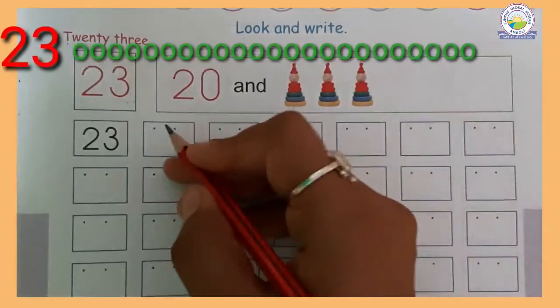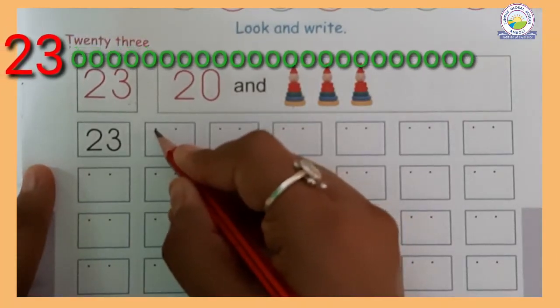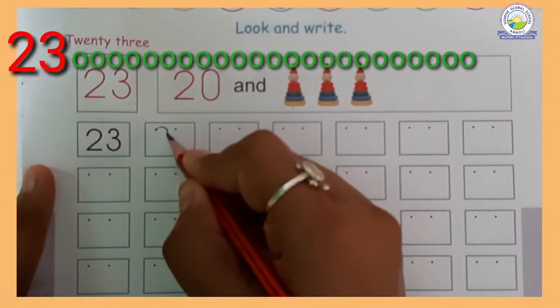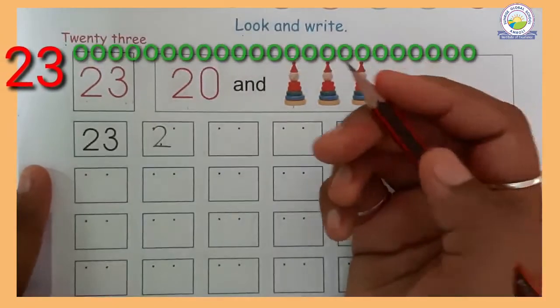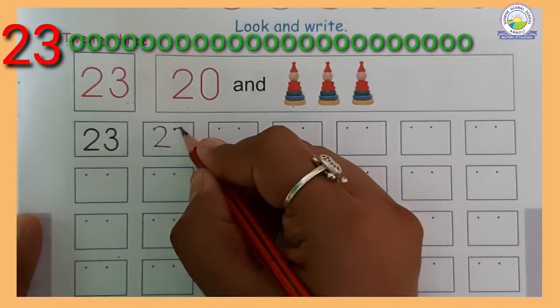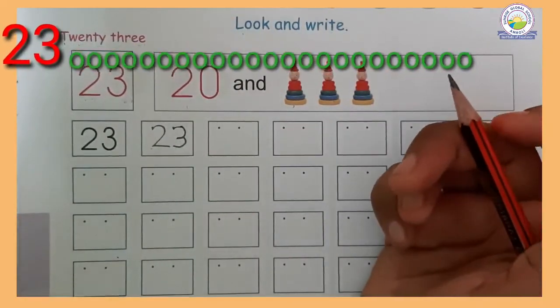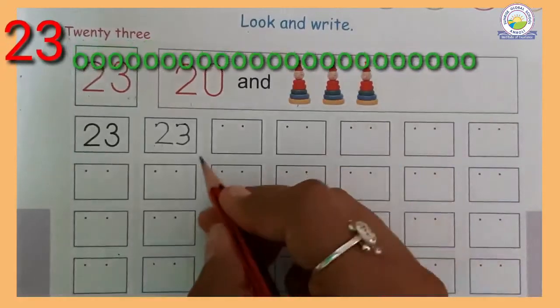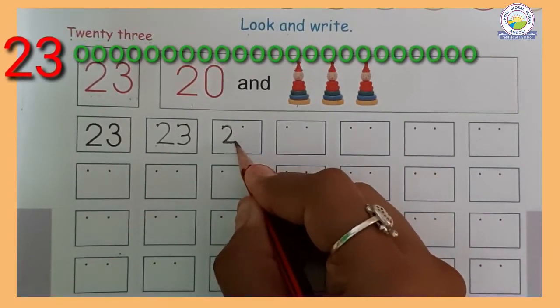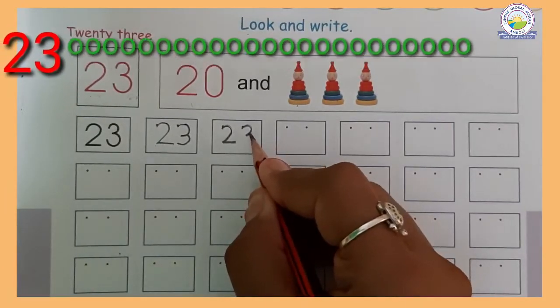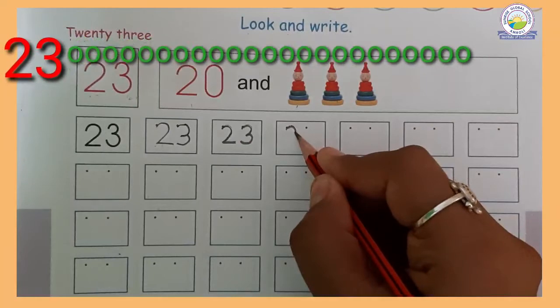Now let's write. I will show you how to write. Make a half circle, slanting line, sleeping line - number 2. Then make one half circle, another half circle - number 3. 2 and 3, 23.